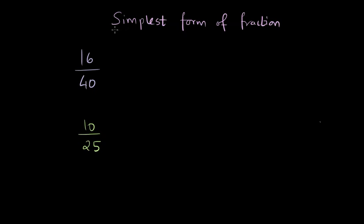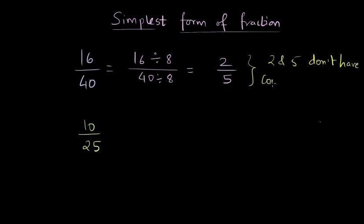When we want to find the simplest form of a fraction, we divide the numerator and denominator by a common number and arrive at a certain fraction. The objective is to reach a fraction where the numerator and denominator do not have a common factor other than one.